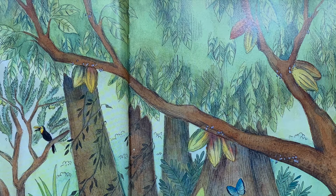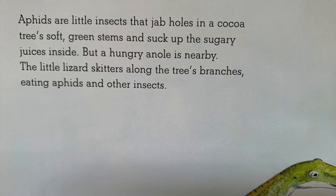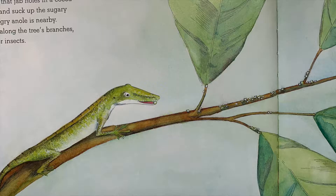And lizards. Aphids are little insects that jab holes in a cocoa tree's soft green stems and suck up the sugary juices inside. But a hungry anole is nearby. The little lizard skitters along the tree's branches, eating aphids and other insects.